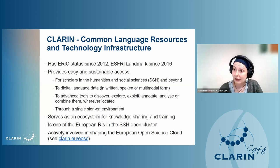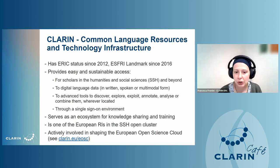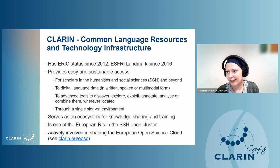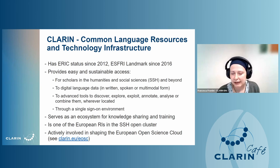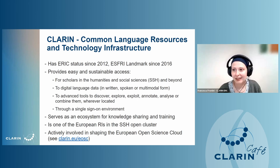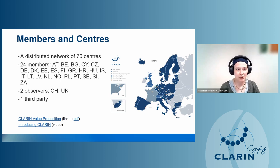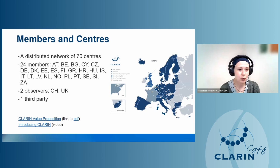CLARIN also provides advanced tools to discover, explore, exploit, annotate, analyze and combine such resources wherever they are located. When resources are password protected, this is done by a system of single sign-on so you can use your institutional academic login to access any resource anywhere. It also serves as an ecosystem for knowledge sharing and training. CLARIN is one of the infrastructures participating in the SSH Open Science Cluster and in the European Open Science Cloud. CLARIN is a distributed virtual infrastructure consisting of a network of distributed data centers in 24 member countries, two observers, and also third-party countries — including South Africa as a full member this year.